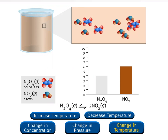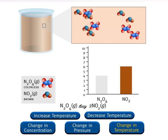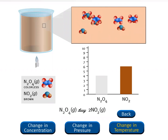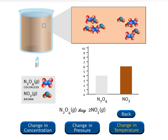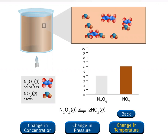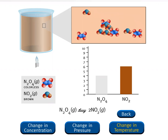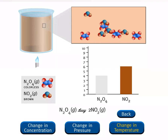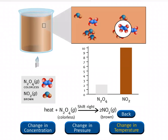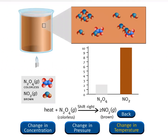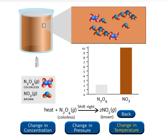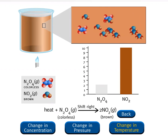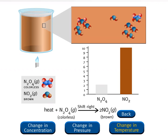You have increased the temperature of the system by adding heat. Le Chatelier's principle states that this stress will be partially offset. This reaction is endothermic, so you can think of heat as a reactant — heat must be supplied to the reacting mixture. The system can partially remove the added heat by shifting to the right, producing more NO₂ and decreasing N₂O₄, as you can see in the microscopic view. As more NO₂, a brown gas, is produced, the color of the equilibrium mixture darkens, as you can see in the macroscopic view.